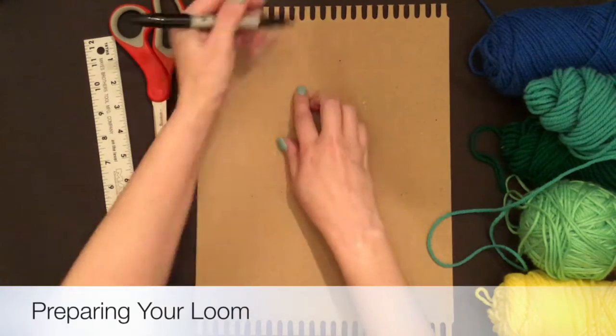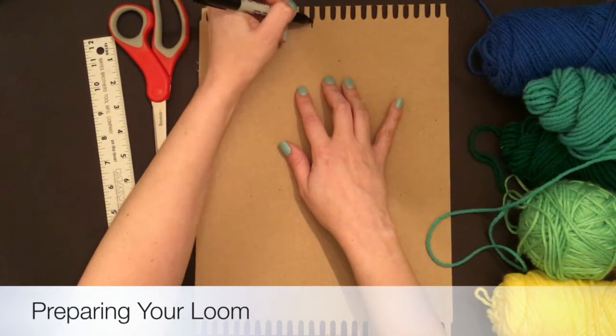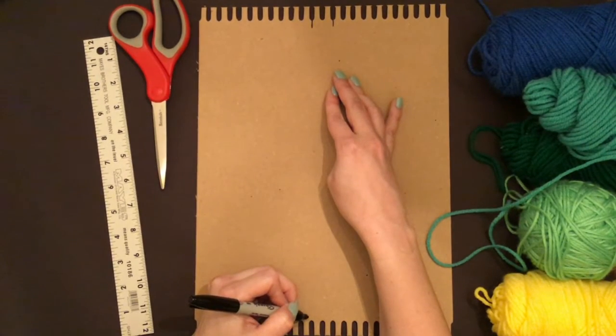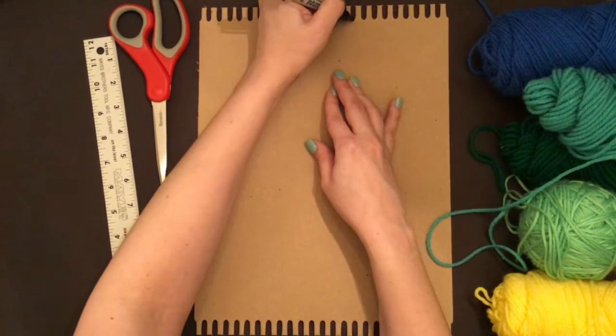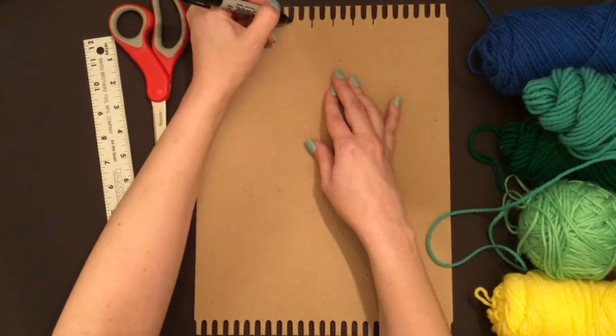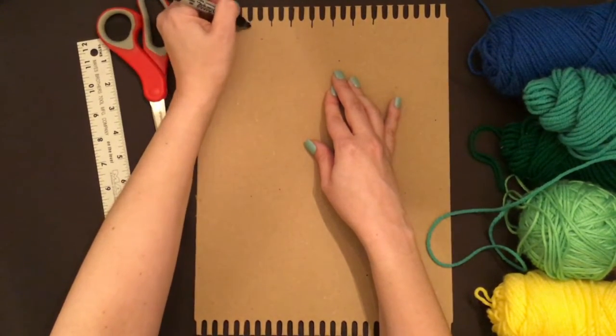Cardboard loom weaving: With your loom, prepare it by creating lines every two notches. You're going to want 10 evenly spaced notches at the top and 10 at the bottom.